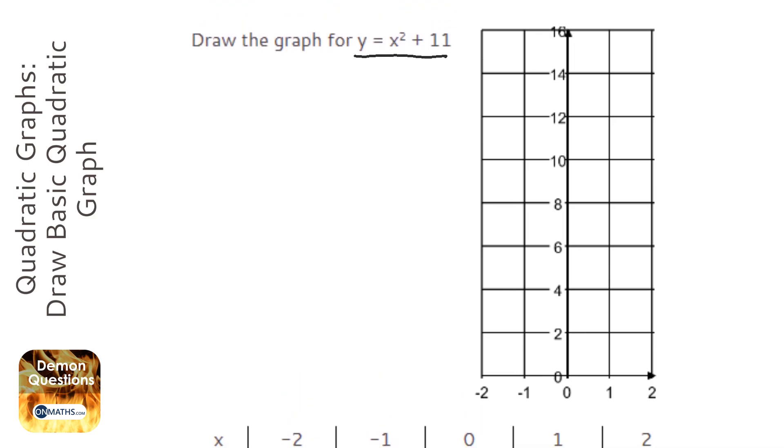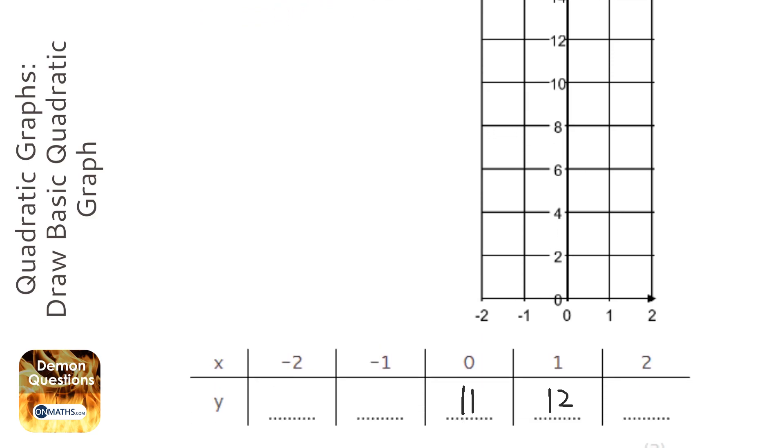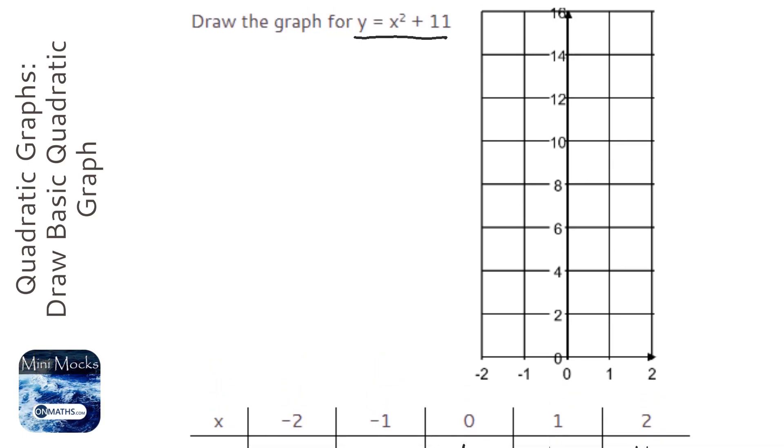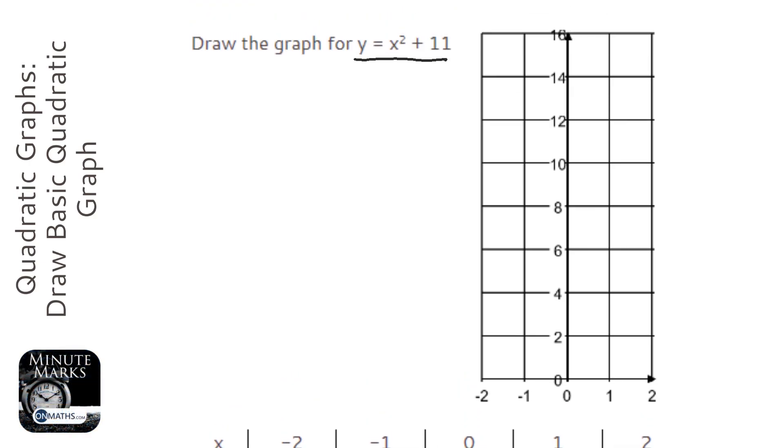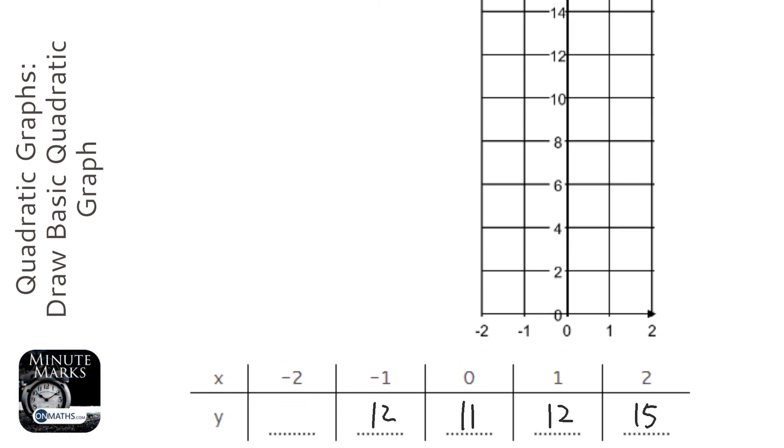And when x is 2, 2 squared is 4, plus 11 is 15. And when x is minus 1, minus 1 squared is 1, plus 11 is 12. And minus 2 squared is 4, plus 11 is 15.